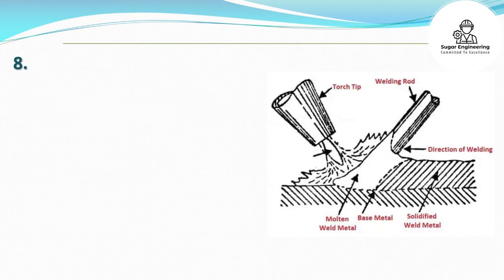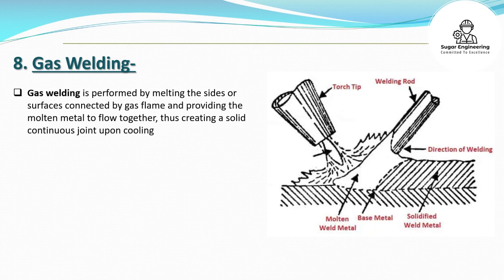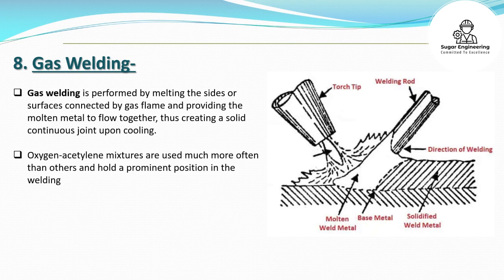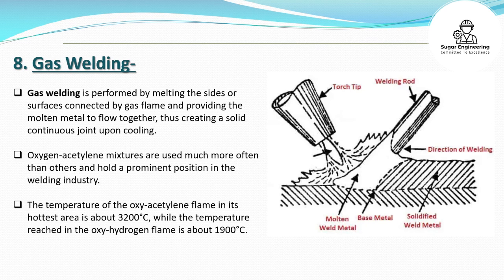8. Gas Welding. Gas welding is performed by melting the sides or surfaces to be joined using a gas flame and allowing the molten metal to flow together, creating a solid continuous joint upon cooling. Oxygen-acetylene mixtures are used most often and hold a prominent position in the welding industry. The temperature of the oxy-acetylene flame in its hottest area is about 3,200 degrees Celsius, while the oxy-hydrogen flame reaches about 1,900 degrees Celsius.